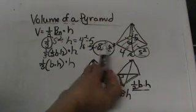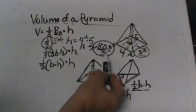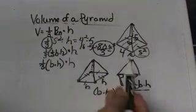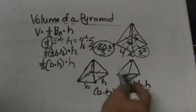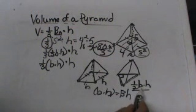You could leave it like that or put it in your calculator 80 divided by 3 to get the decimal. There is one example. Let's look at this right triangular base. This one gives students trouble.